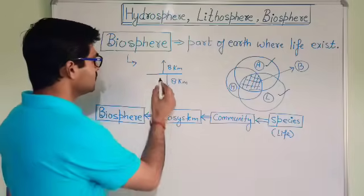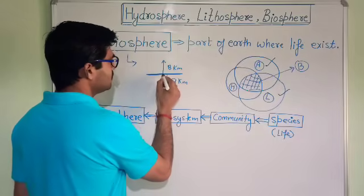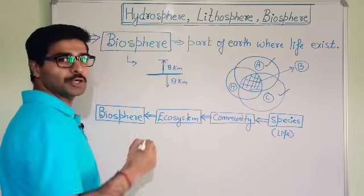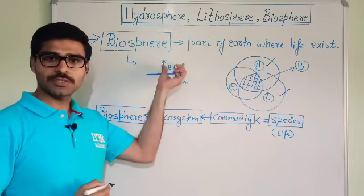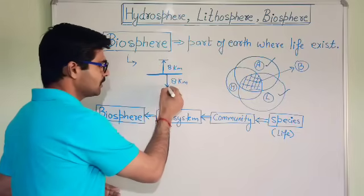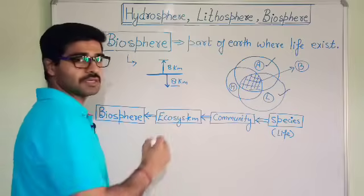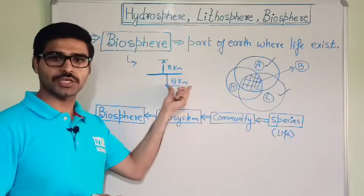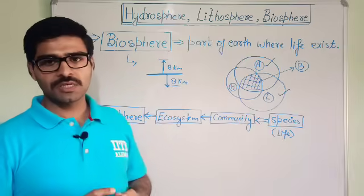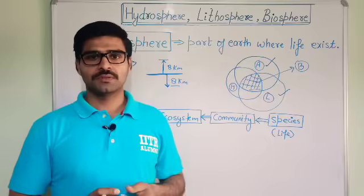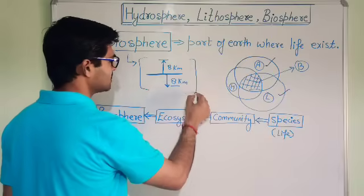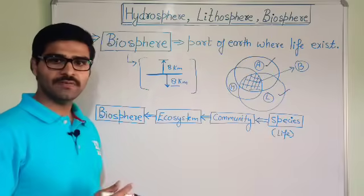In the atmosphere, life exists up to an altitude of 8 kilometers from the ground surface. In water, life exists up to a depth of 8 kilometers in the ocean. And in lithosphere, life exists up to the depth where roots penetrate the soil. This is the boundary or extent up to where life exists.